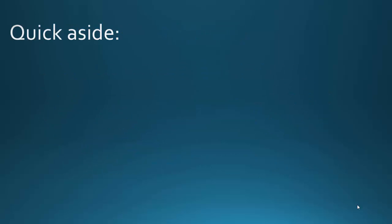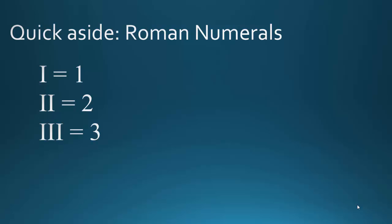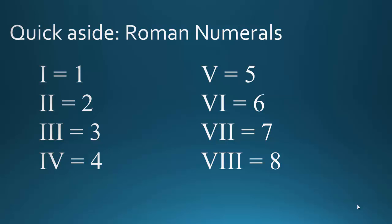Quick aside, because I don't know if they're teaching this anymore in elementary school: we're going to be dealing with Roman numerals, and we only need to know eight of them. I is one, II is two, III is three, IV is four, V is five, VI is six, VII is seven, VIII is eight. And realistically, we'll predominantly use one through five, but it's helpful to know all eight.